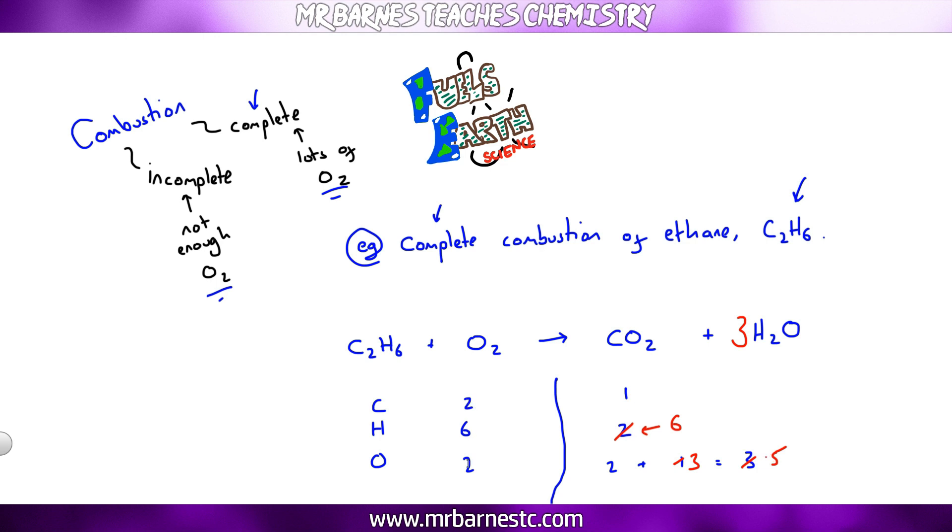The next thing I'm going to look at is carbon. I've got two on the left and one on the right. So I put a two in front of my CO2. That gives me two carbons. So that's great. But again, it also doubles my oxygen. So I change that to a four, giving me seven in total.